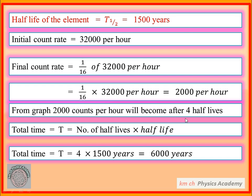So after four half-lives the count rate becomes 2,000 per hour. The total time elapsed is: t = number of half-lives × half-life, where number of half-lives is denoted by small t and half-life by t one-half. Four half-lives have passed, each of 1500 years, so 4 × 1500 = 6,000 years. This means after 6,000 years the count rate will become one over sixteen of its original value.